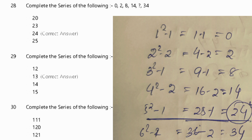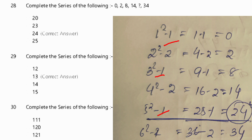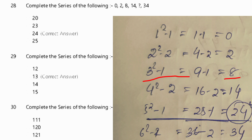Looking at the pattern: 1 minus 1 is 0, then we give 2, which equals 2. Then 2 minus 2 equals 2, then 3 minus 2 equals 3 minus 2, which is 2. Then we add 4 minus 2.